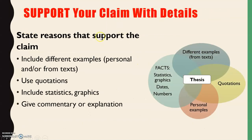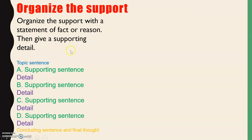So now we need to support. What do we need to support our thesis or topic sentence with? We need different examples and facts such as statistics, graphics, dates, or numbers. We can also have personal examples and use quotations from texts. We use all of those things and organize it in a clear way that gives commentary or an explanation. We have our topic sentence, then supporting sentences each with a detail, and then our concluding sentence or final thought.